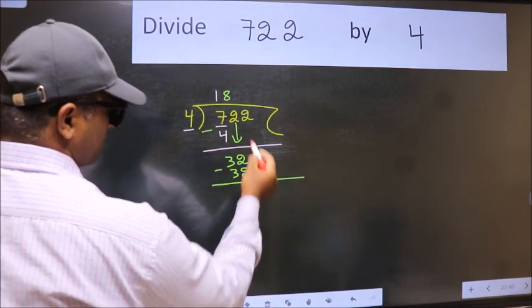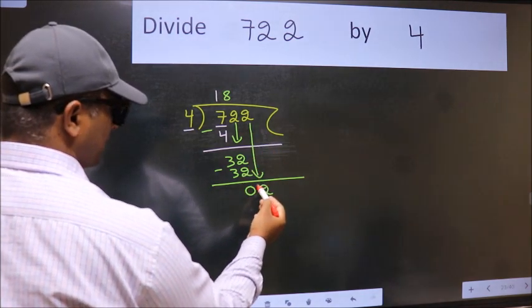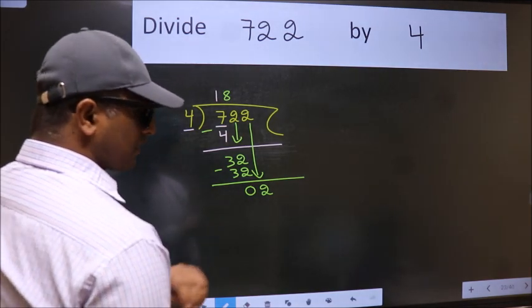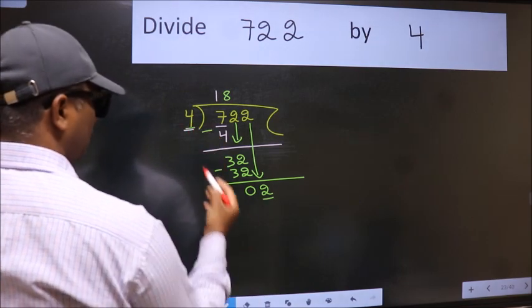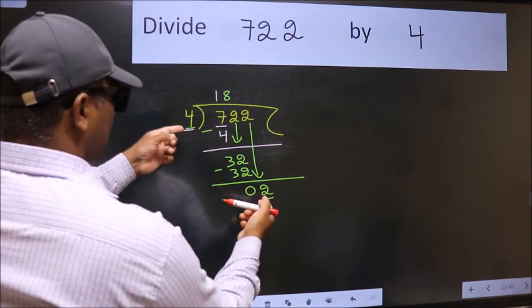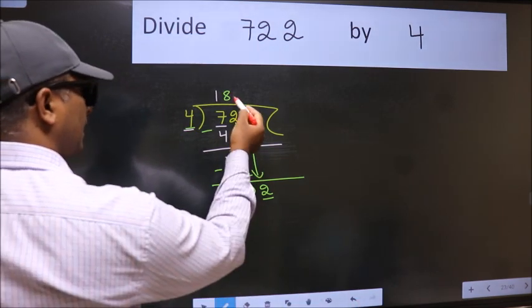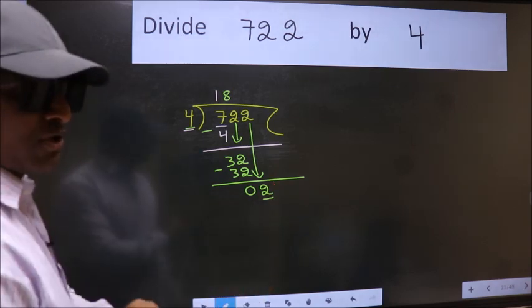After this, bring down the beside number. So 2 down. After this step, the mistake happens and the mistake is this. Here we have 2 and here 4. 2 is smaller than 4. So what many do is they directly put dot, take 0, which is wrong.